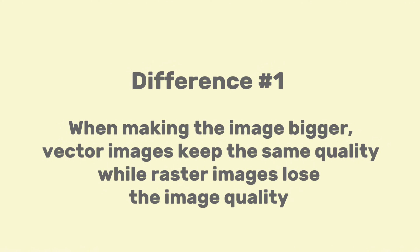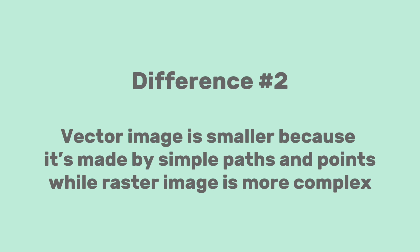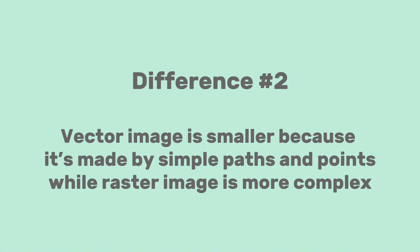Difference number one: a vector image will keep the same resolution when you scale it, whereas a raster image's resolution does not stay the same. Difference number two: a vector image file is much smaller than a raster image file, since a raster image is usually more complex — it has more colors, more elements, or more complex compositions.